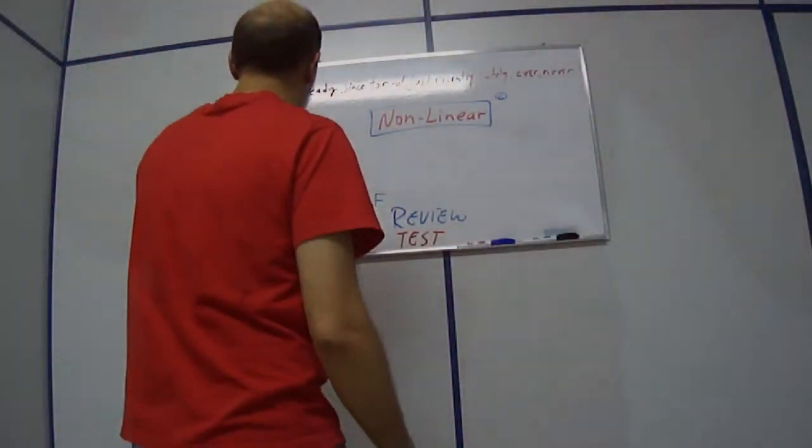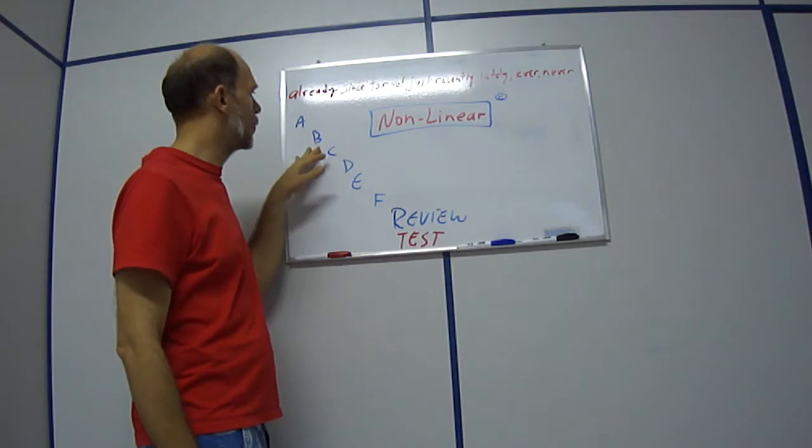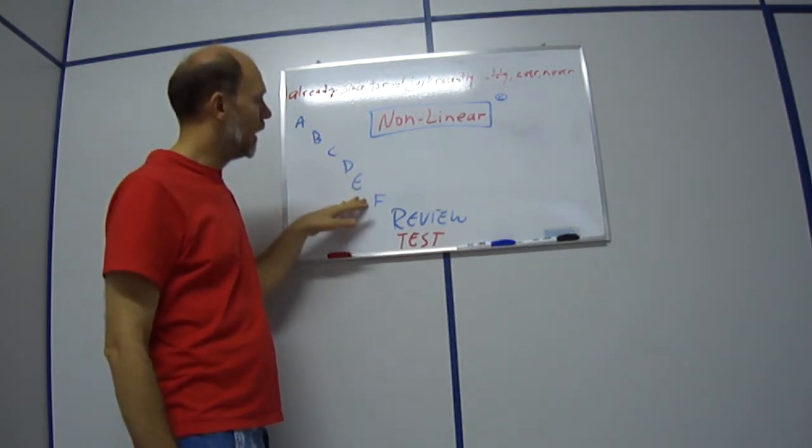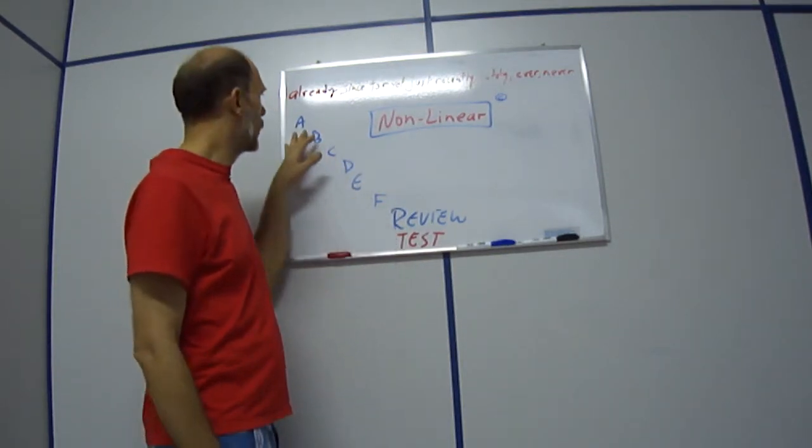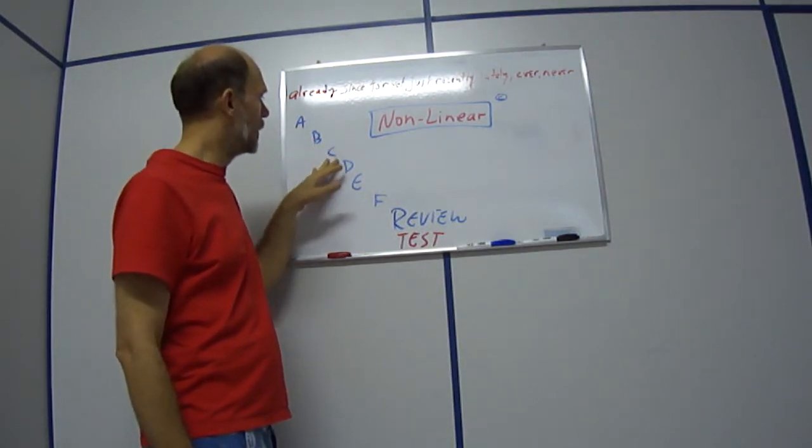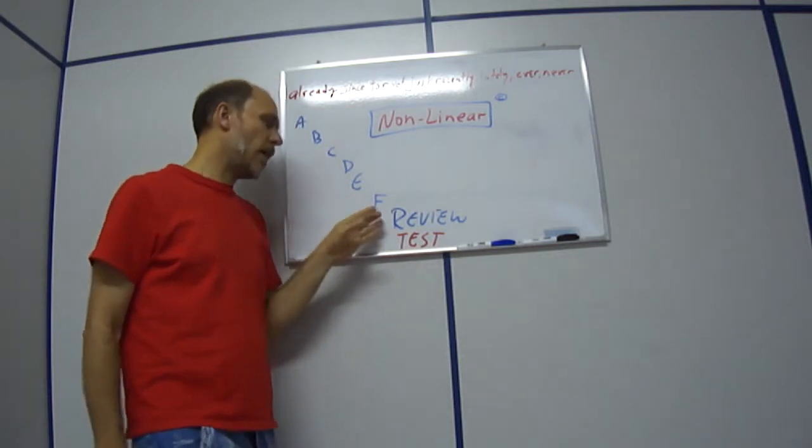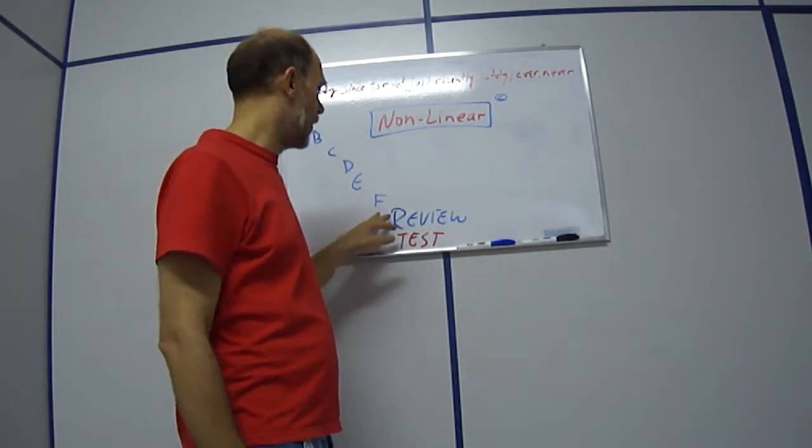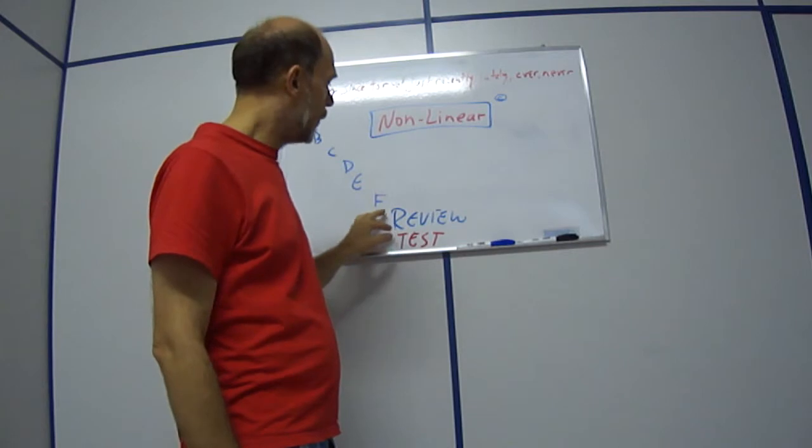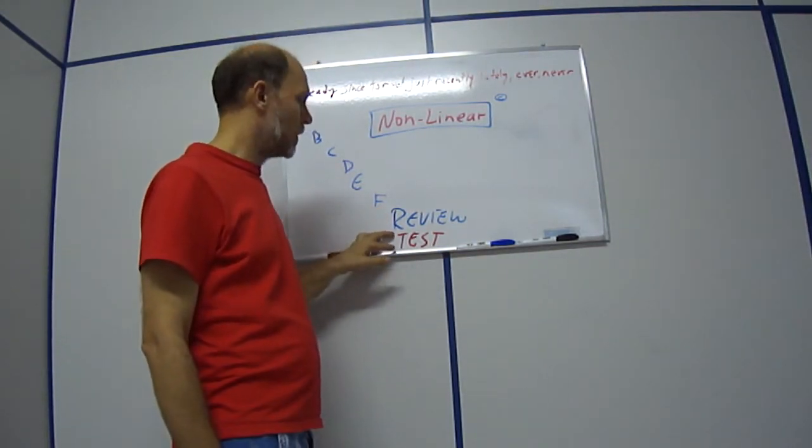Everyone knows that the traditional educational model exposes students to the material in a sequential manner. Lesson 1, content A, lesson 2, content B, lesson 3, content C, and subsequent lessons, until after 6 to 10 lessons, then there is one review, of which there is one class period dedicated to review, and then there is a test.